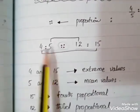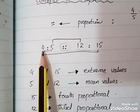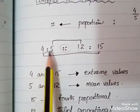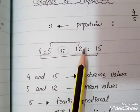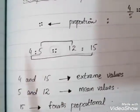We have written the proportion as: 4 ratio 5, proportion 12 ratio 15. So the proportion is written as 4:5::12:15.